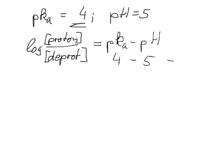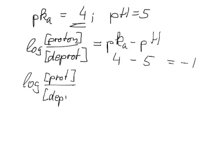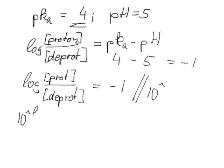So 4 minus 5, that equals minus 1. So we've got log protonated over deprotonated form equals minus 1. To get rid of the log, we know that we have to take both sides 10 to the power of.